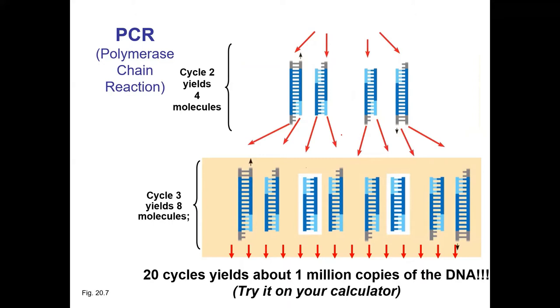Twenty cycles gives you about a million copies of DNA — try it on your calculator, two times two, twenty times. Suddenly we go from one copy of DNA to many copies. This is a hugely useful technique. Before PCR, copying DNA was a lot of hard work.